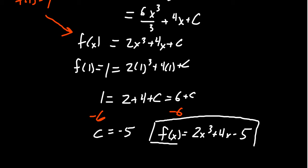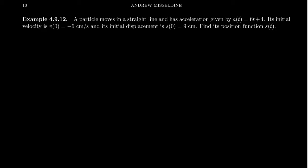We can determine the exact value of that +C, and if we had forgotten the +C we'd have the wrong function right now. Let's look at another example. Suppose a particle moves in a straight line. It has an acceleration given by the acceleration function a(t) = 6t + 4. We also know its initial velocity—the velocity at time zero is -6 cm/s—and we also know its initial position, it's located at 9 cm at the beginning of the problem.